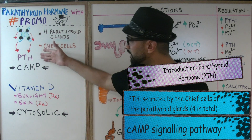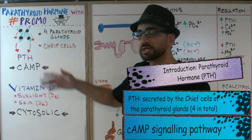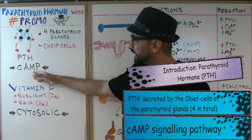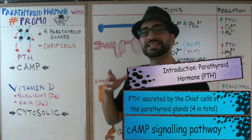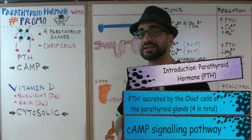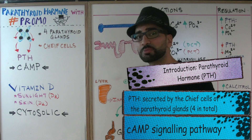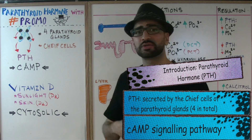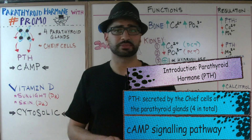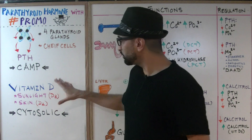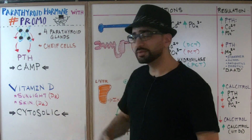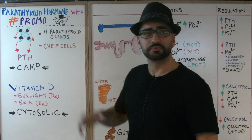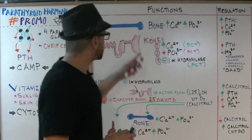Once the parathyroid hormone is released and finds its receptors, it works through the cyclic AMP signaling pathway — another important point you can score points on for USMLE Step 1 or any other board exams.